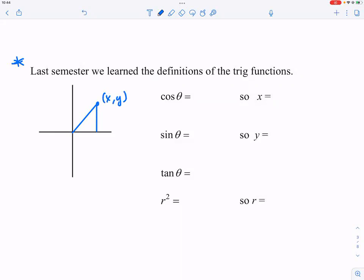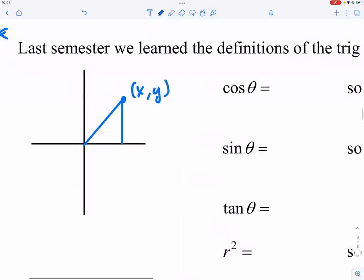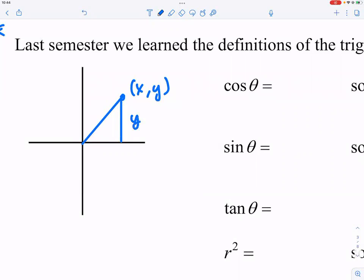We say we have X and Y, right? So what we're going to label here is that this is Y, this is your X, and this is your R.